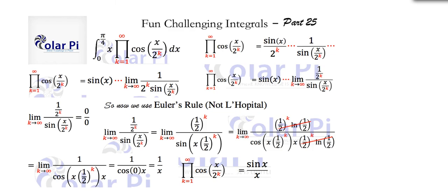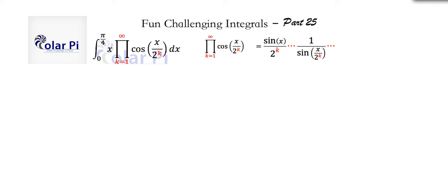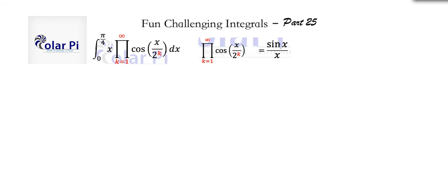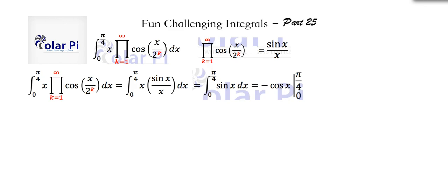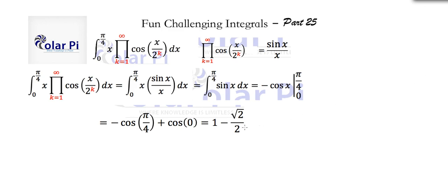Since our infinite product is simply sine x over x, we replace the infinite product in the integrand with sine x over x. The integral reduces to this, and clearly we can cancel the x in the numerator with the x, leaving the integral from 0 to pi over 4 of sine x. That's as simple as ABC: negative cosine x evaluated from 0 to pi over 4, which is negative cosine of pi over 4 plus cosine of 0. Cosine of 0 is 1 and cosine of pi over 4 is root 2 over 2. So our final answer is 1 minus root 2 over 2.